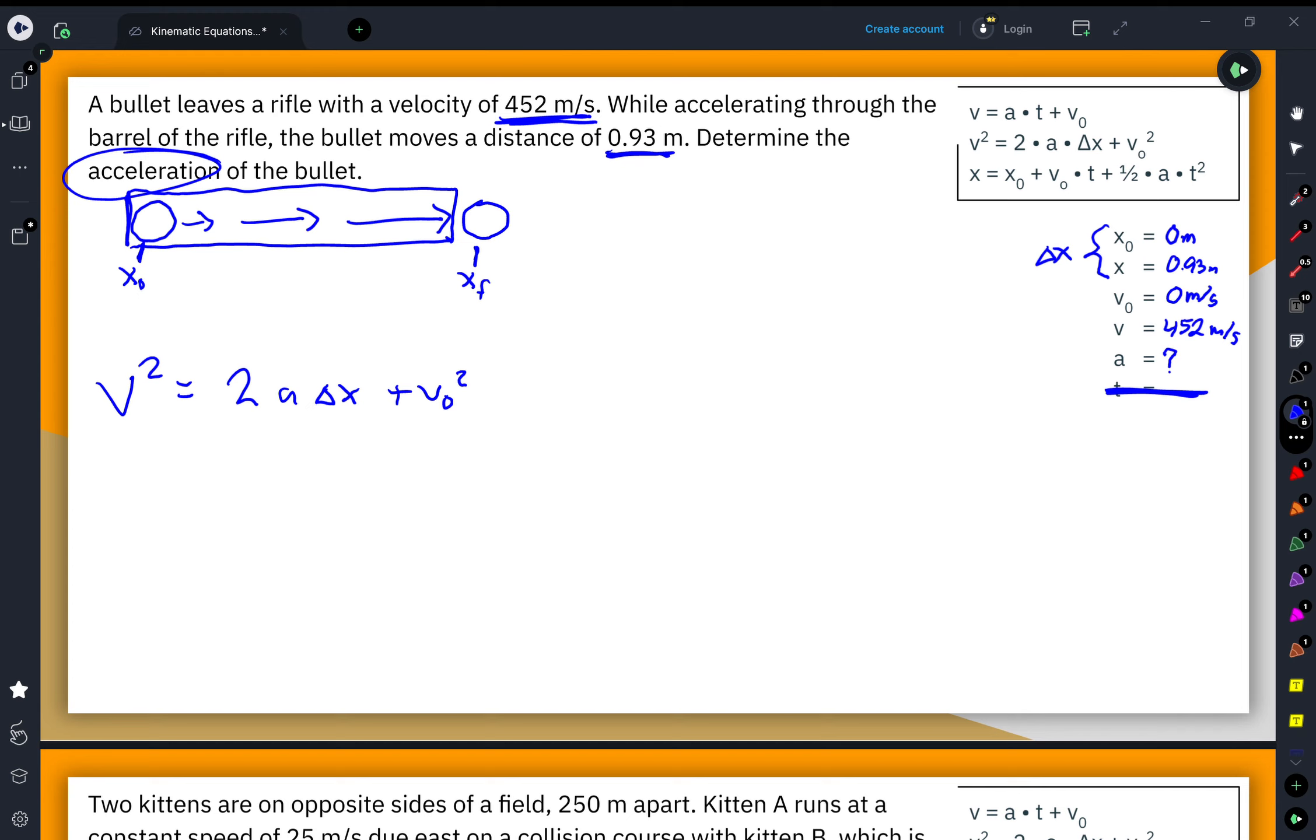While I could plug in the numbers and then rearrange it, I think I'm going to solve it algebraically first. Then that will just be the setup and we can plug in the numbers into a calculator later. So I'm going to subtract my initial velocity squared from both sides. That means the left side of my equation is now v squared minus v naught squared.